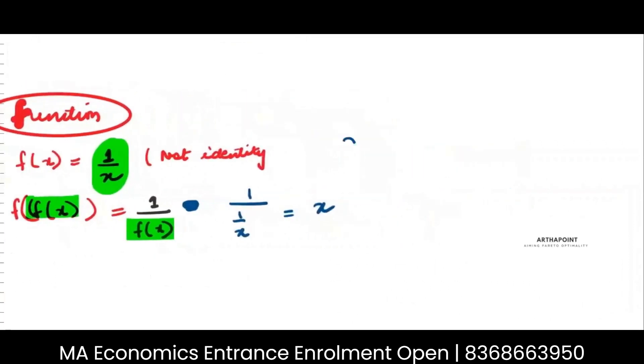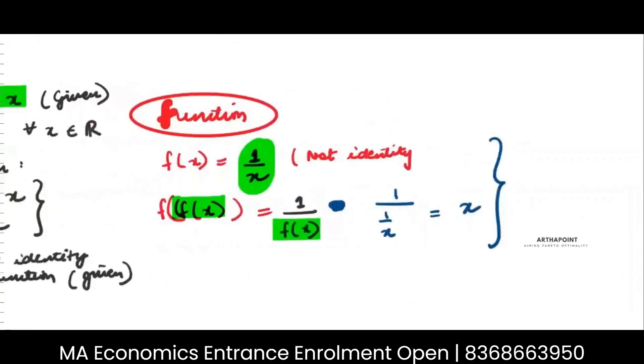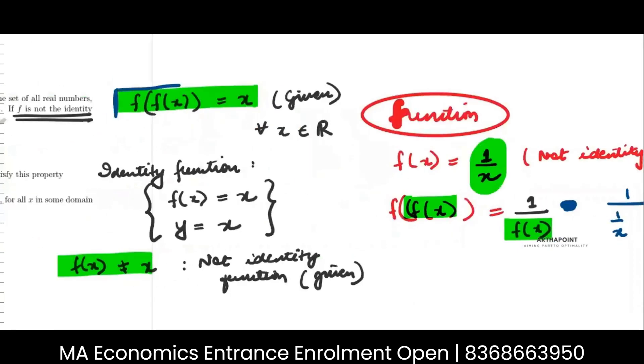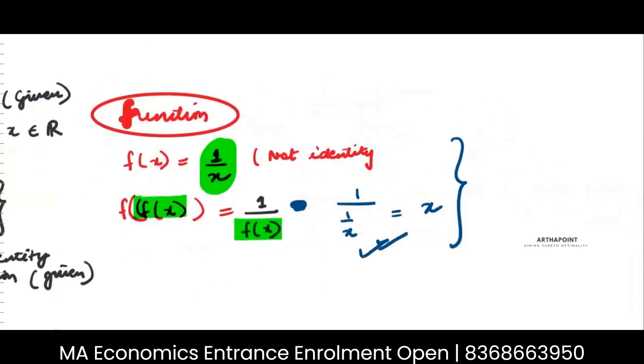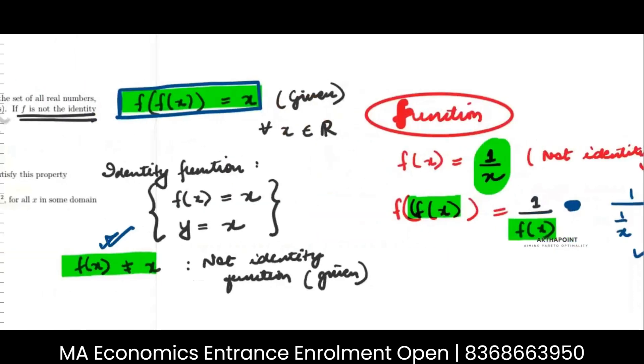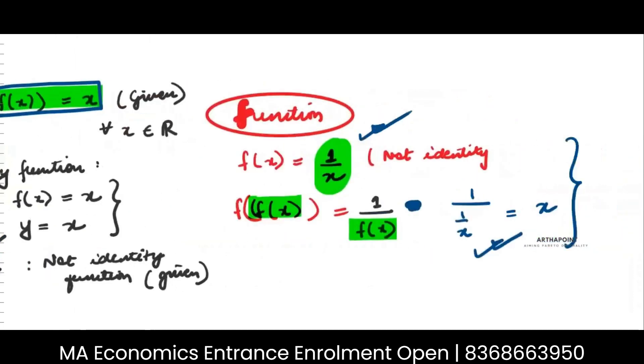So I have got two things now and I have been able to satisfy both the properties. f of f of x is x. I have satisfied this thing. f of x is not equal to x. I have satisfied this also.